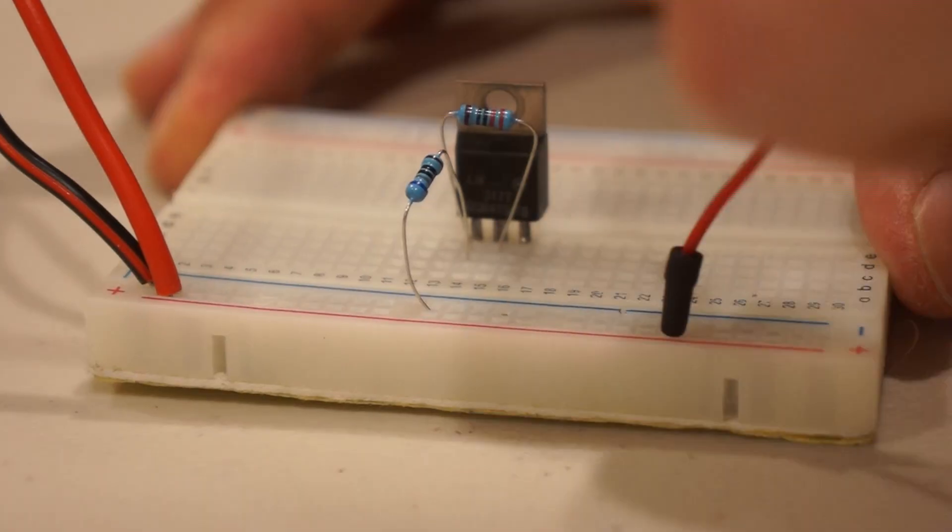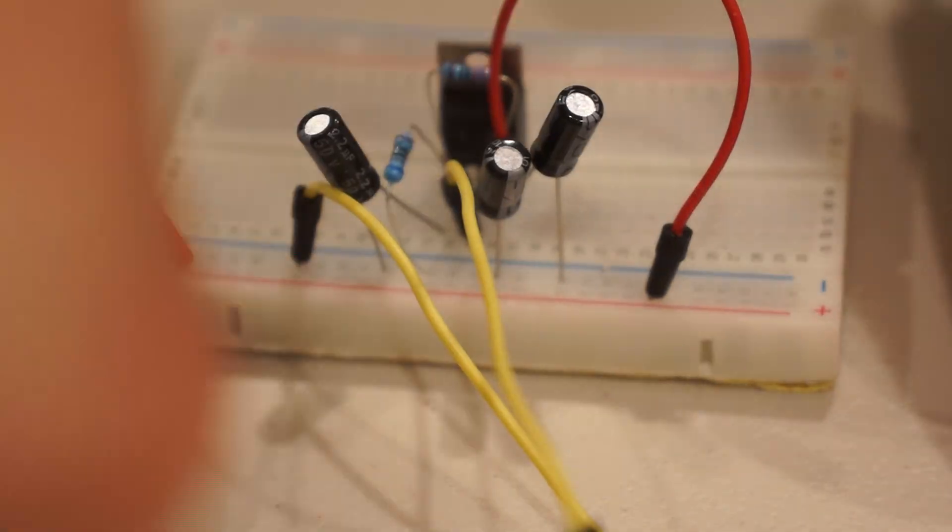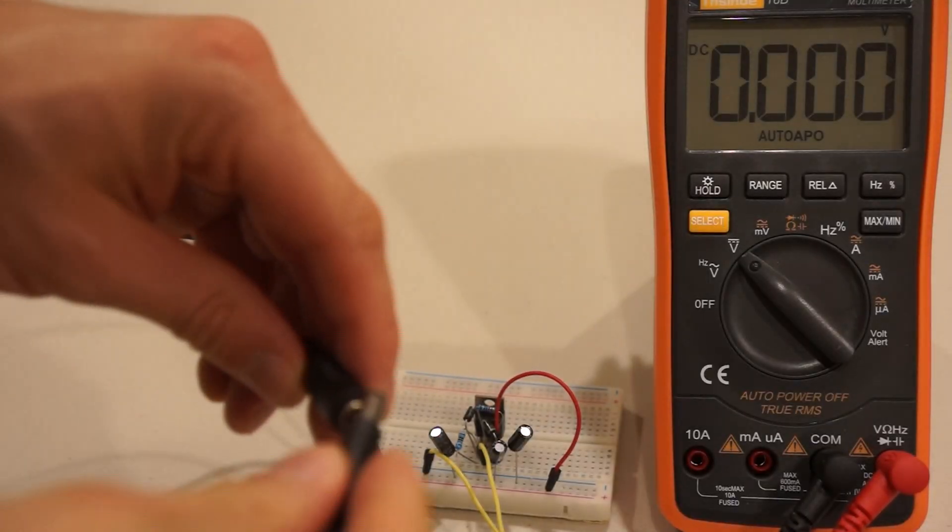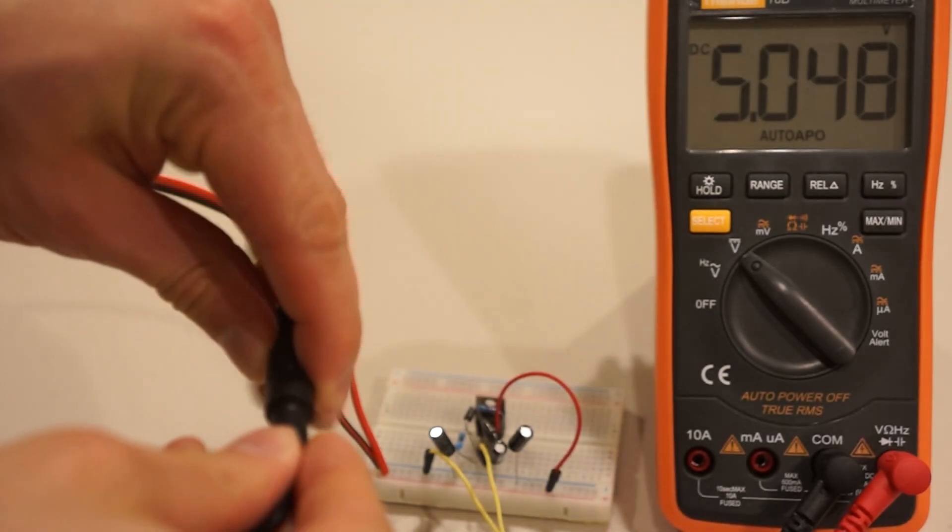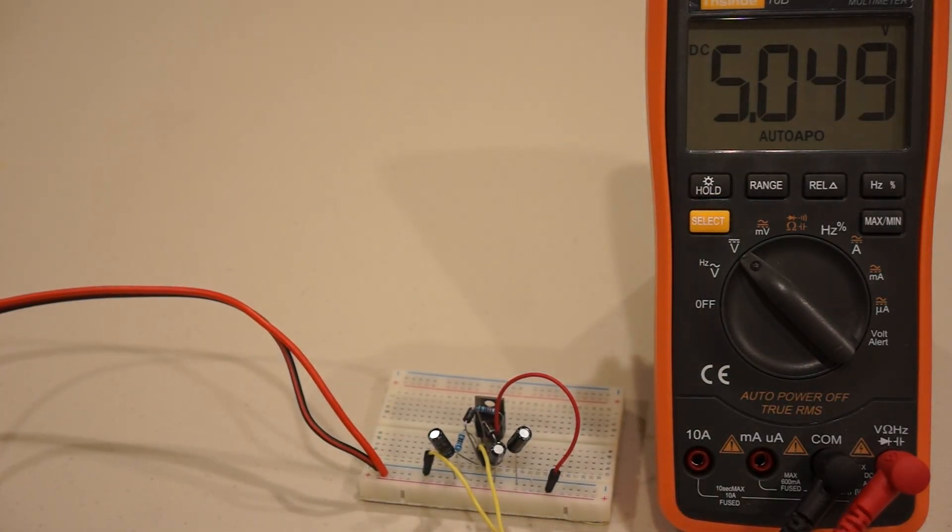We'll put that circuit together on a breadboard and make sure it works like we expect. I'll use a 9 volt DC input to test it. Since that's working, we'll solder the circuit more permanently.